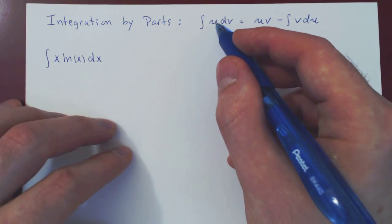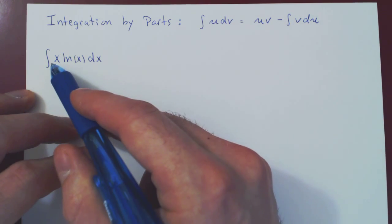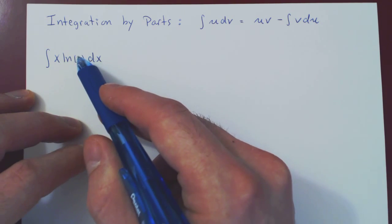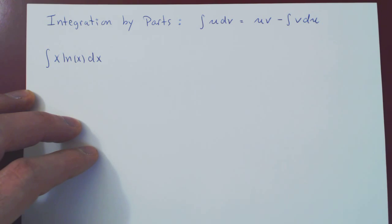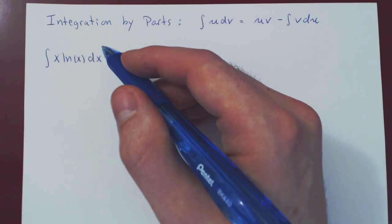So the first question is always, how do we choose our u? And if you look here, there are two functions we can choose from: the function x and the function ln of x. Which one do we choose for our u? If you remember, the rule of thumb is that u must be the function whose derivative gives us the greatest simplification.